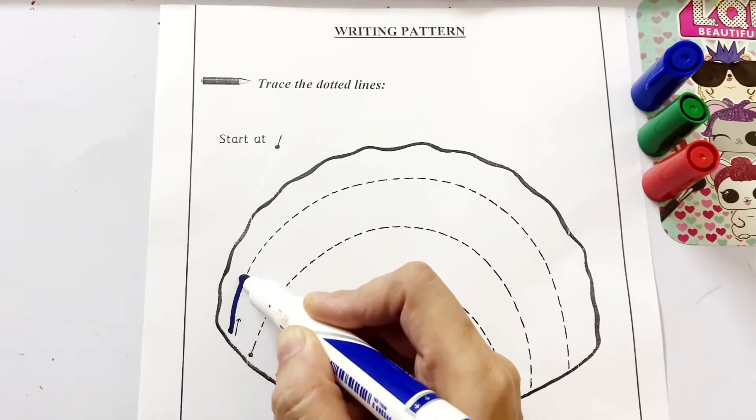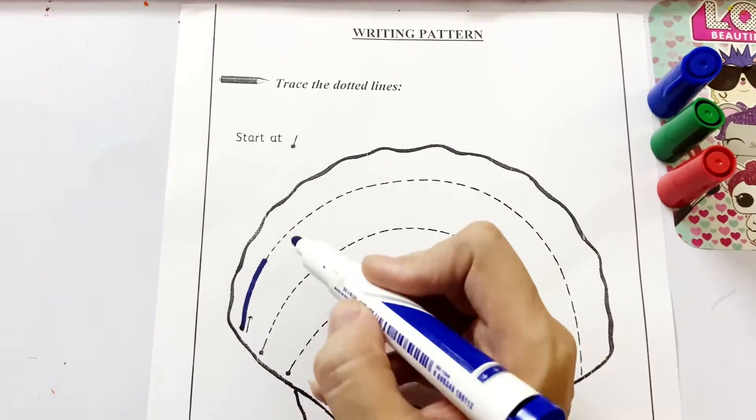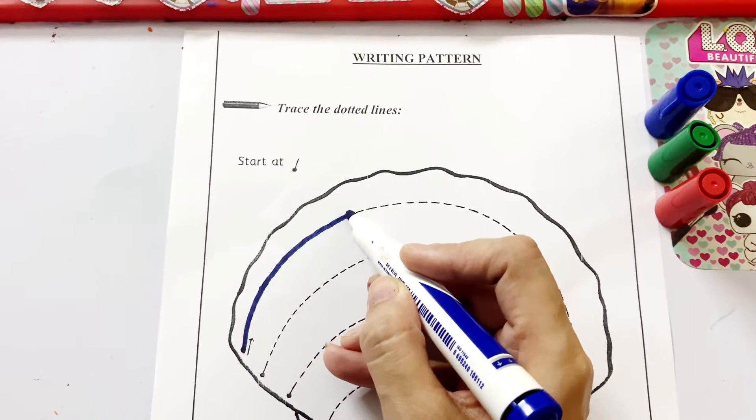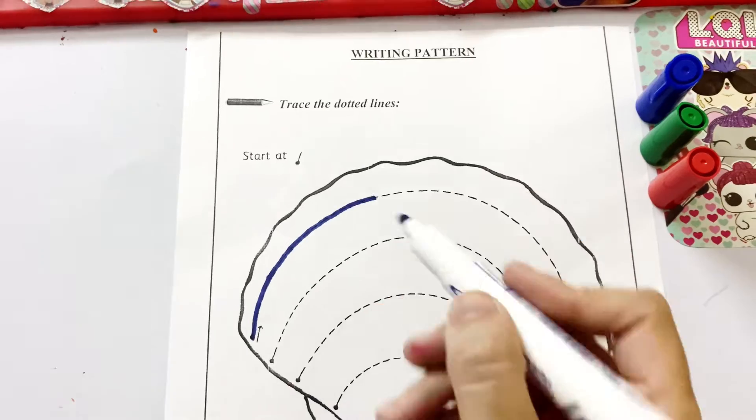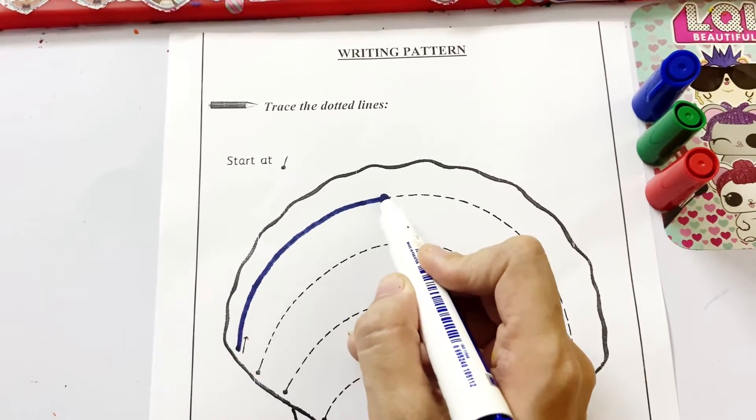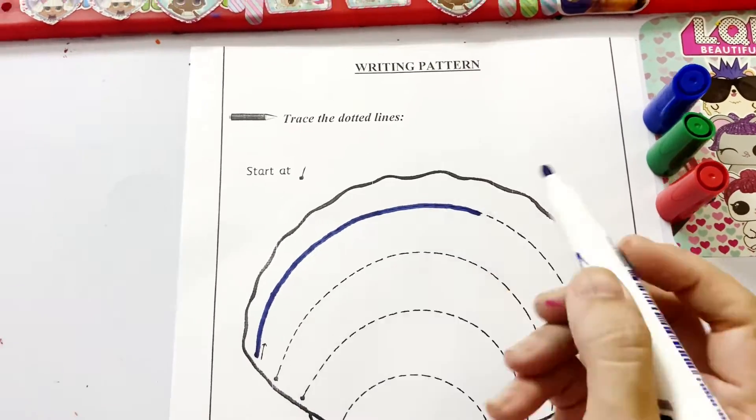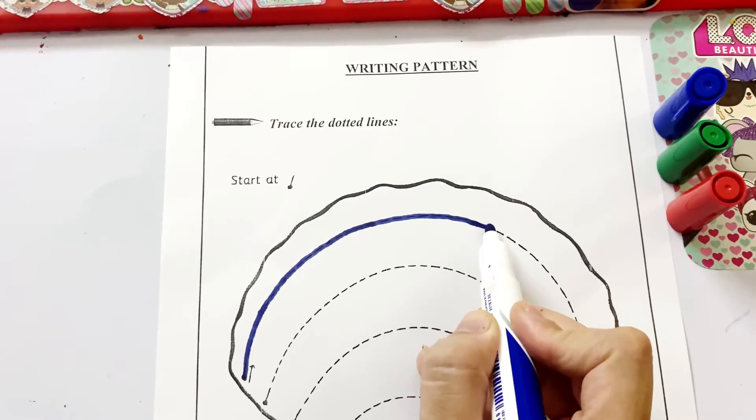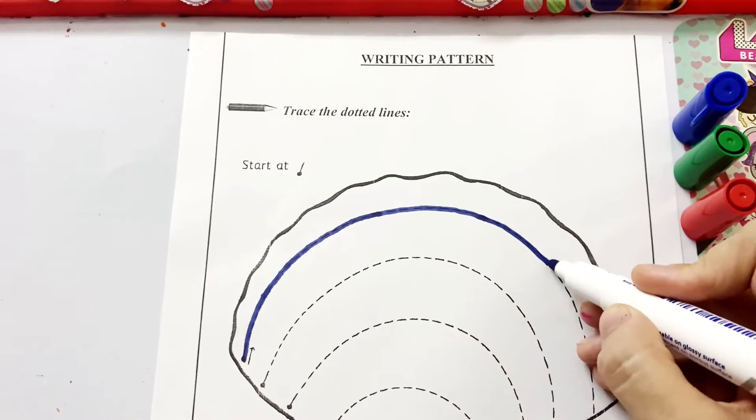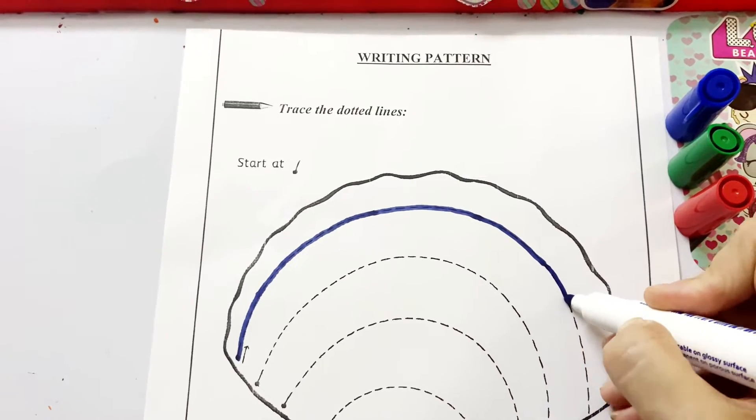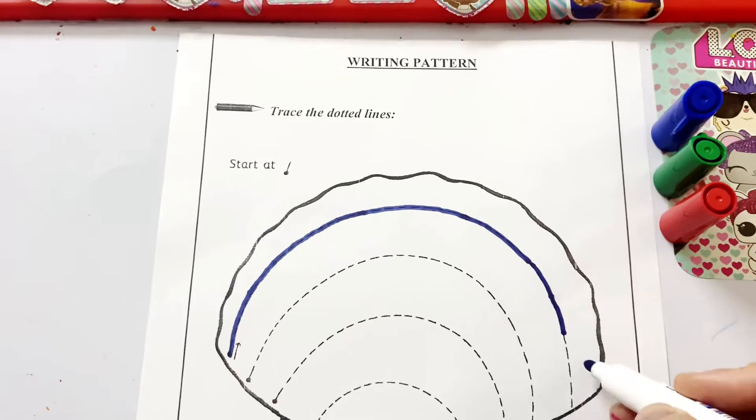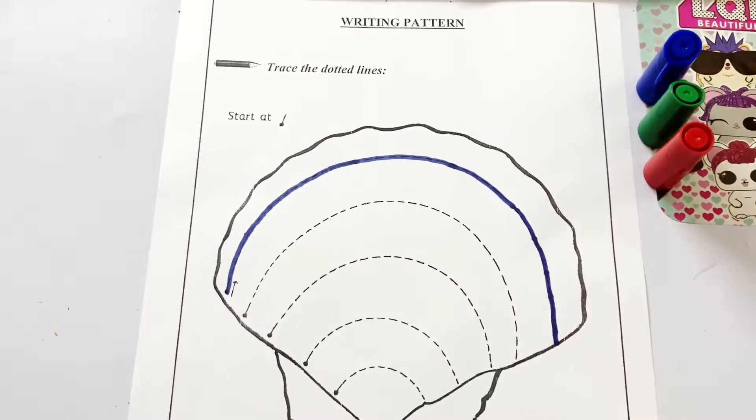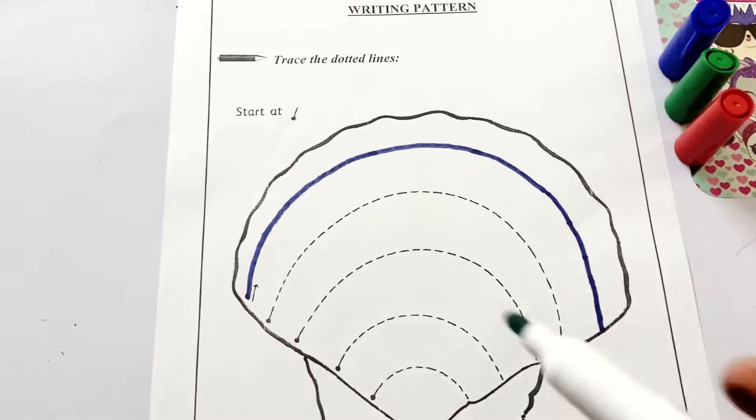You have to trace on the dots, okay? Nicely and slowly, slowly, slowly. Keep going, keep going. On the dots, fully, fully. Yay, we did it! Now I use green color.